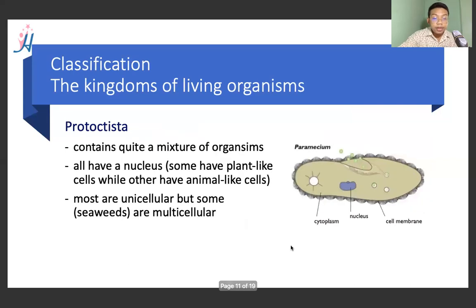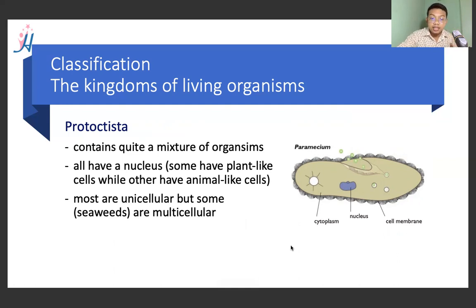So we have kingdom number four. We have the animals' kingdom, the plants' kingdom, the fungi kingdom — that gives us our kingdoms so far.